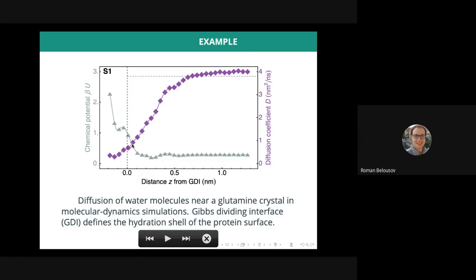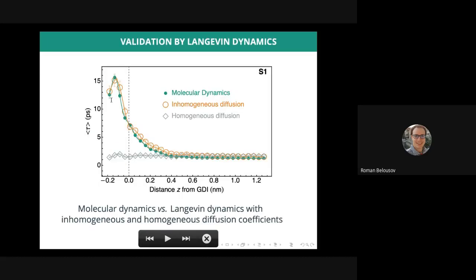The chemical potential, by using the log of the steady state density, shows that the hydrophobic surface of the protein expels water, as manifested by the growth of the chemical potential, the external potential in this case, near and beyond the Gibbs dividing interface.